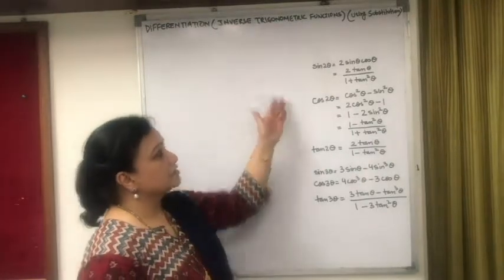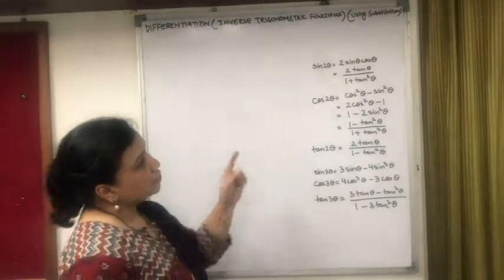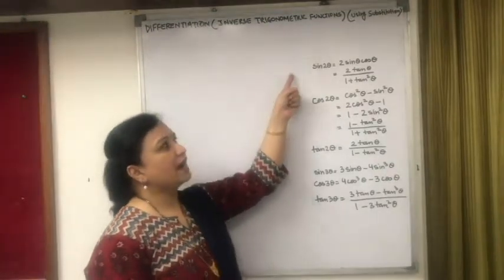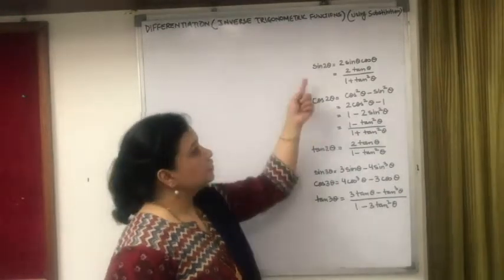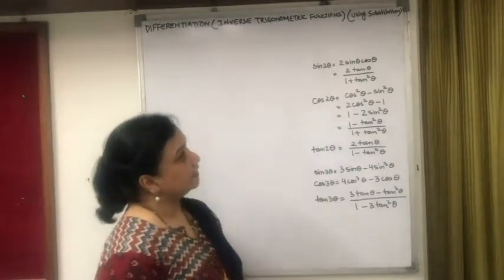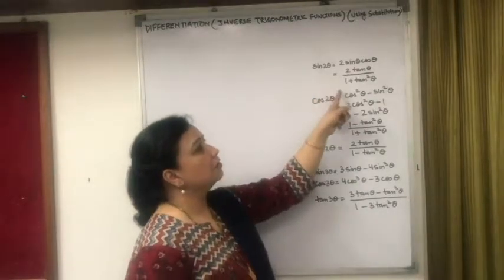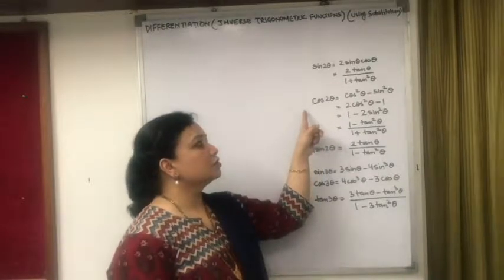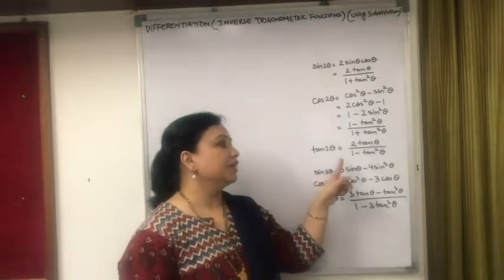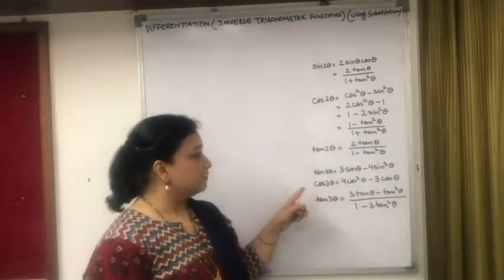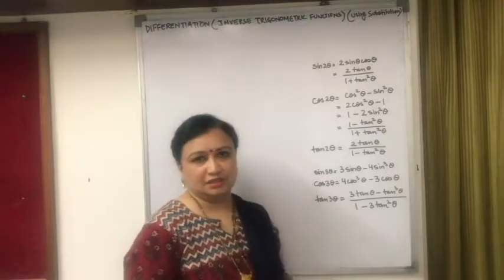Simplification by substitution is simple. First of all, we correlate the expression with the standard results. For this, you should know the standard results like sin 2θ = 2 sin θ cos θ, as well as sin 2θ = 2 tan θ / (1 + tan²θ). Similarly, for cos 2θ we have four results, for tan 2θ we have one result. Please also remember the results for sin 3θ, cos 3θ, and tan 3θ.